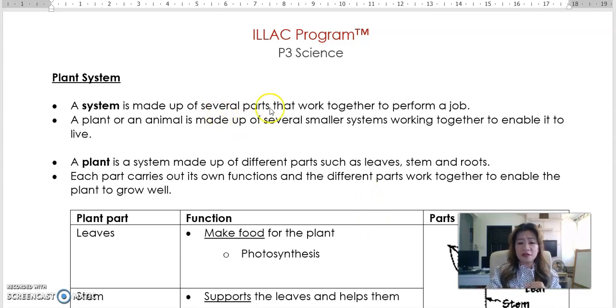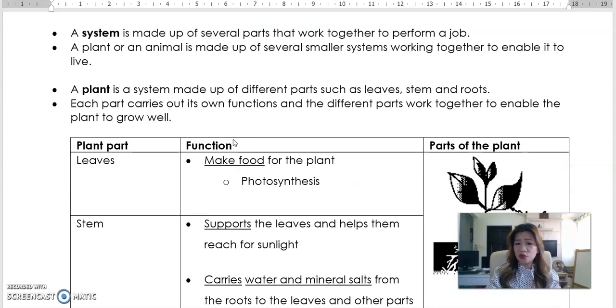We learned body system in a previous video. So now we're going to do plant system. What is a system? A system is made of several parts that work together to perform a job. That's what we learned in body system as well. Many different organs all come together to perform the function of our human body. So a plant or an animal is made out of several smaller systems working together to enable it to live just like humans.